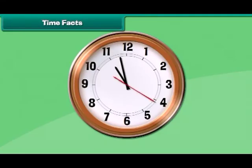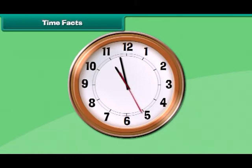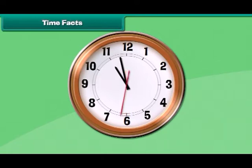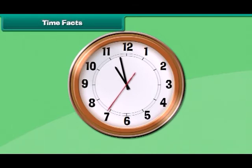You must have seen all the hands of the clock rotate in one direction — that is from left to right. This is known as the clockwise direction. The reverse rotation is known as the anti-clockwise direction.